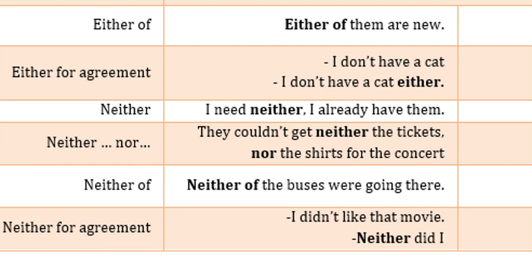Luego tenemos 'neither', que significa 'ni' o 'ninguno'. Ejemplo: 'I need neither, I already have them' — no necesito ninguno, ya los tengo. 'Neither...nor' en una frase: 'They couldn't get neither the tickets nor the shirts for the concert' — no pudieron conseguir ni los tiquetes ni las camisetas para el concierto. 'Neither of the buses were going there' — ninguno de los buses iba hacia allá. Y 'neither' para expresar acuerdo: 'I didn't like that movie' — 'Neither did I' — tampoco yo.